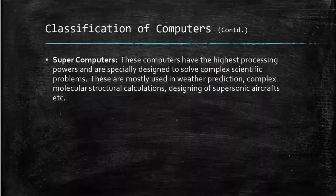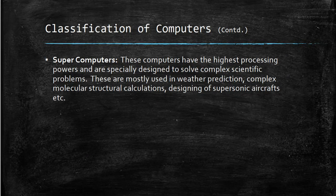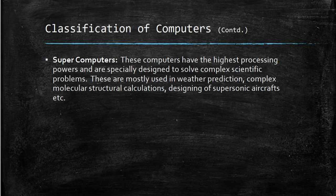Terms like distributed data processing systems or centralized computer systems will be explained in following chapters. Computers having the highest processing power are known as supercomputers. They are specifically designed to solve complex scientific problems and are mostly used in weather prediction, complex molecular structural calculations, and designing of supersonic aircraft. The processing power of supercomputers is measured in petaflops.